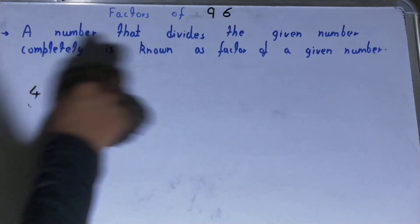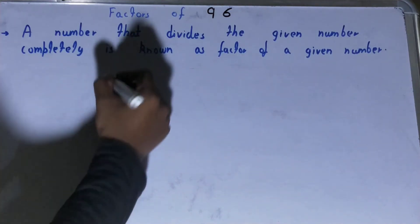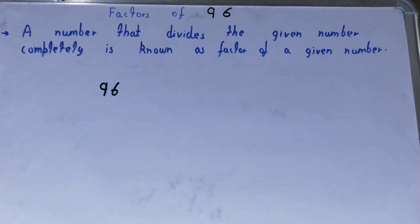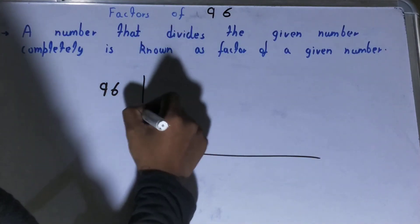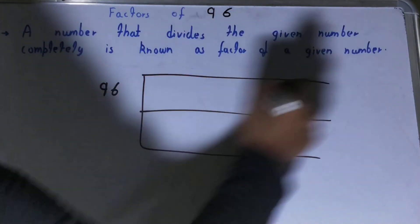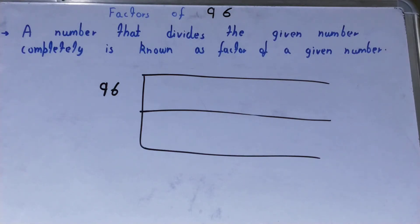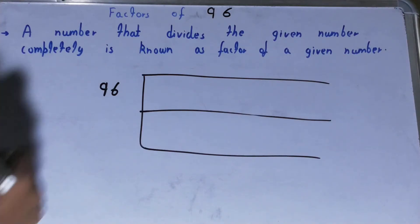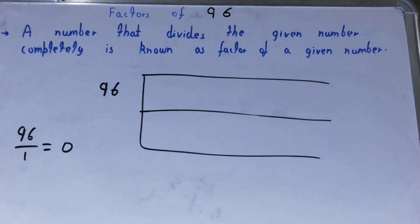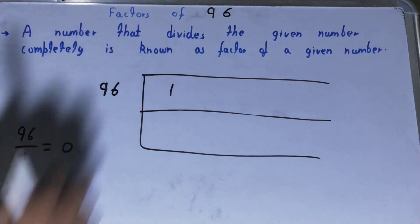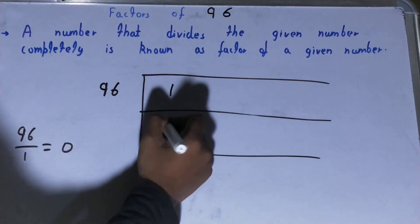Now let's move to our main problem: what are the factors of 96? We'll draw it out and start with the lowest natural number, which is 1. If we divide 96 by 1, we get the remainder as zero, so 1 is a factor. And since 1 times 96 equals 96, 96 is also a factor.